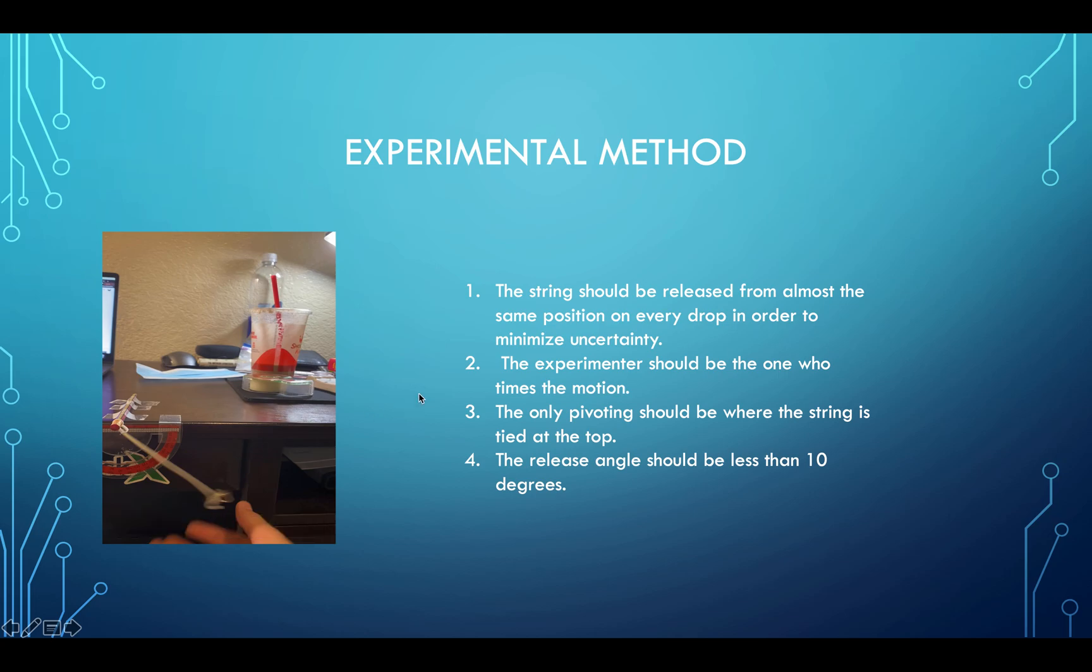We have a set of conditions or rules that we should keep in mind when performing such an experiment. First, the string should be released from almost the same position on every drop in order to have the lowest uncertainty possible. Two, the experimenter should be the one who times the motion. Three, the only pivoting should be where the string is tied at the top. And lastly, the release angle should be certainly less than 10 degrees.